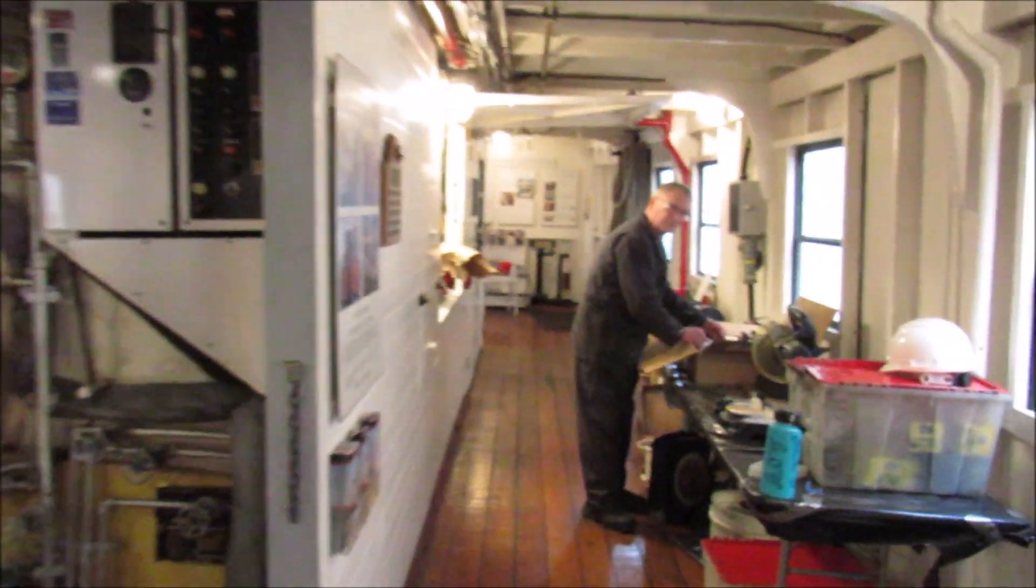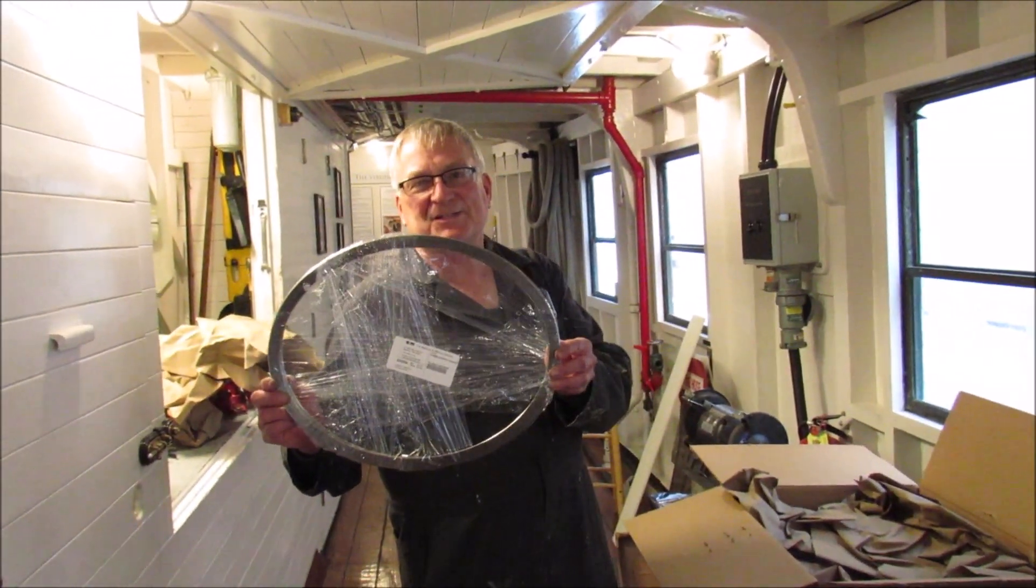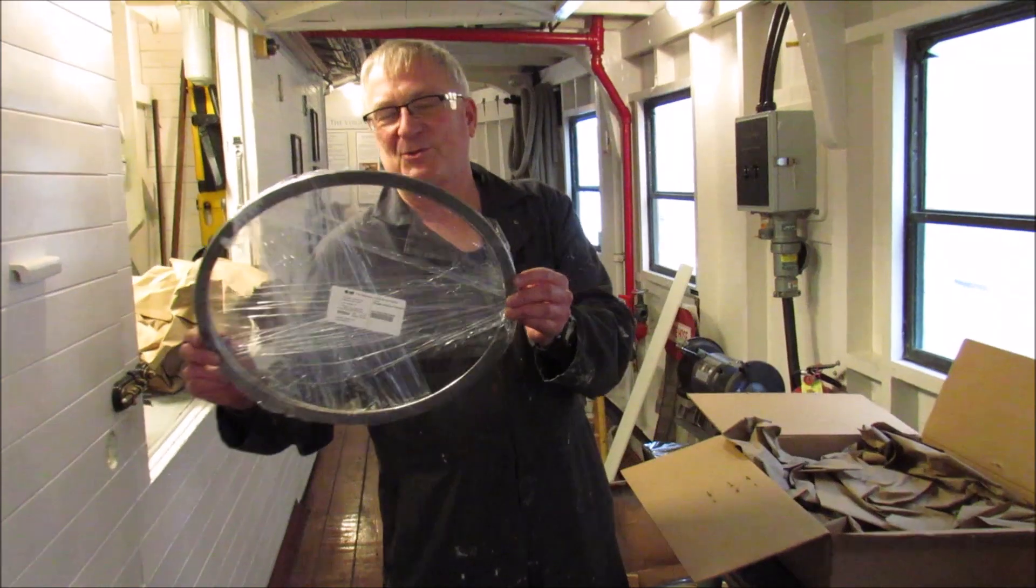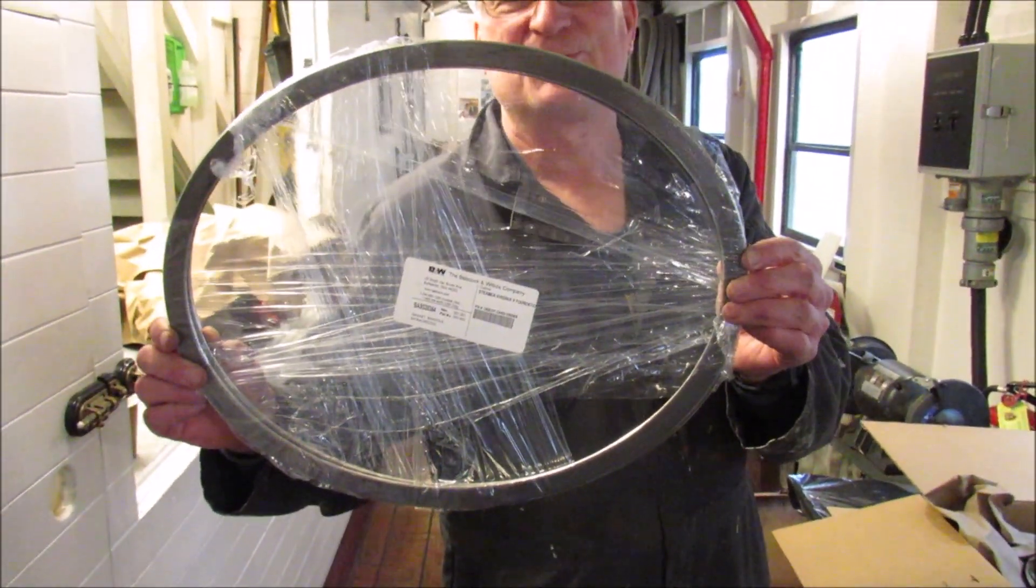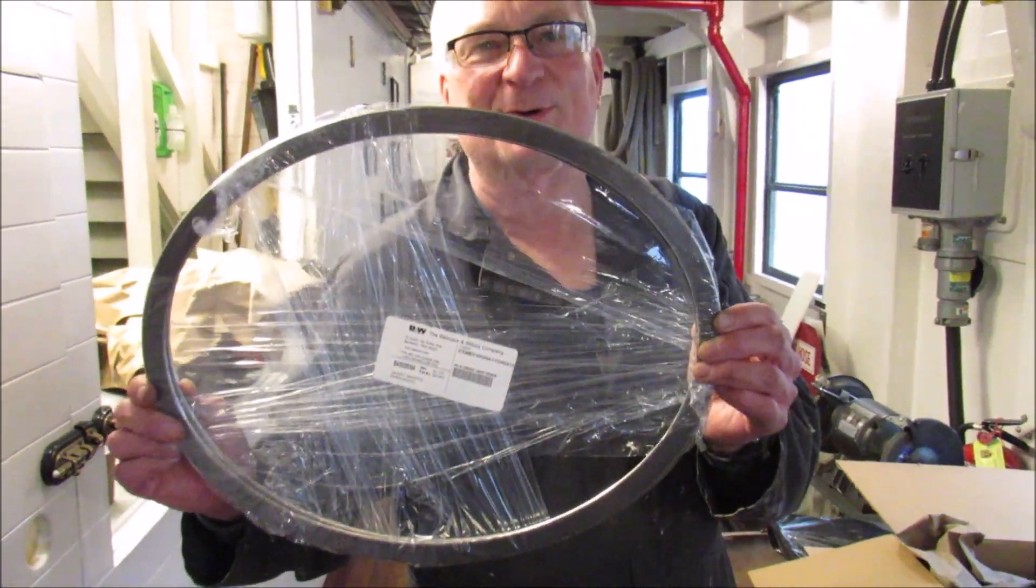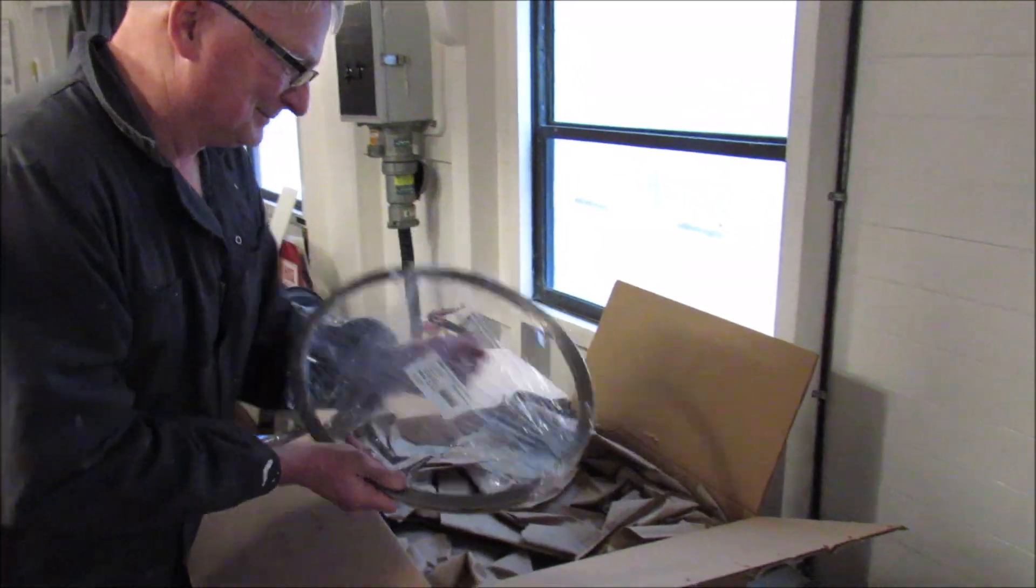But first we got a package in the mail. Unboxing video, what's in the mail today? Here we've got gaskets for the boiler. There's two of them, and they're $70 a piece. This is what your donations are helping us support. Yes, boiler gaskets. So these guys go for the manhole covers.